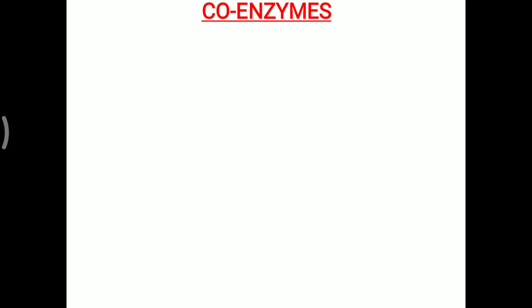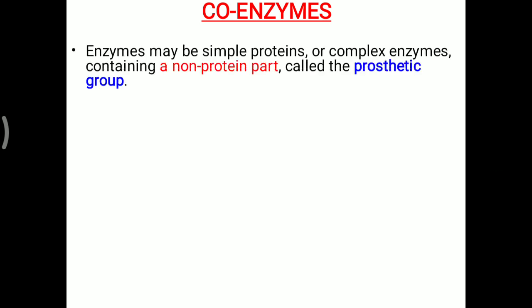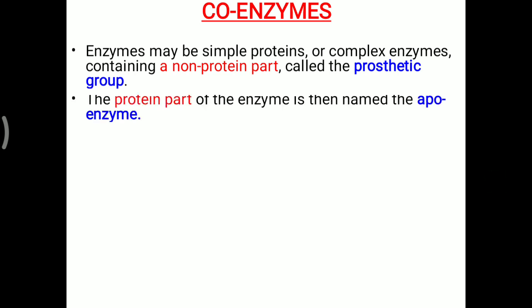Today's topic is about coenzyme. We have seen about the enzyme — they are simply biocatalysts. Now in detail, the coenzyme: an enzyme may be a simple protein or a complex enzyme containing a non-protein part, and this non-protein part is called a prosthetic group or artificial part of the molecule, required for the working of the enzyme.